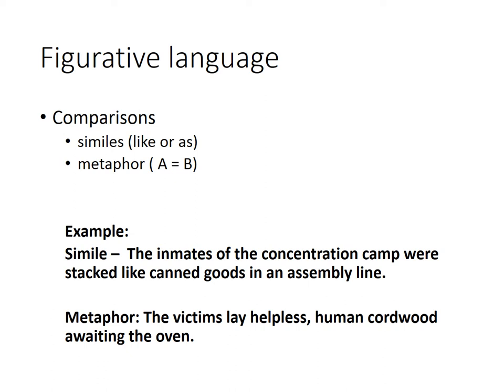Here's an example of a metaphor: 'The victims lay helpless, human cordwood awaiting the oven.' Here we're saying the victims actually are human cordwood, which is like firewood — when in fact they're not firewood at all, but just reminiscent of it. By describing them as human cordwood, we get the idea of these people being victims awaiting their doom in a gas oven.